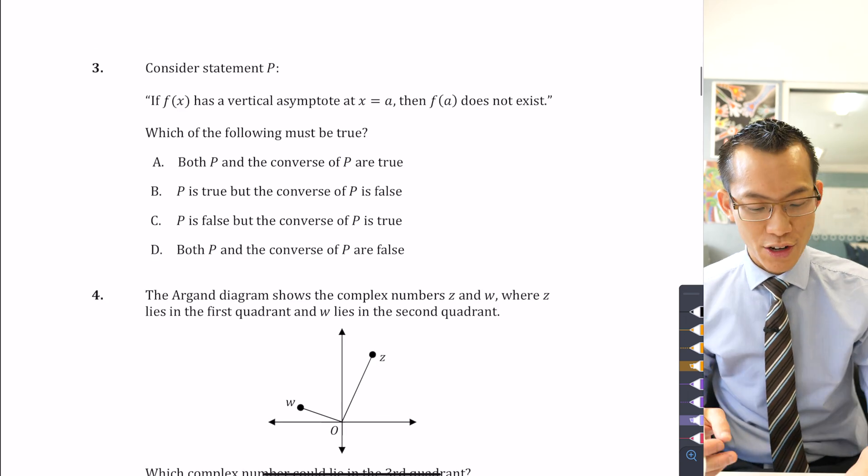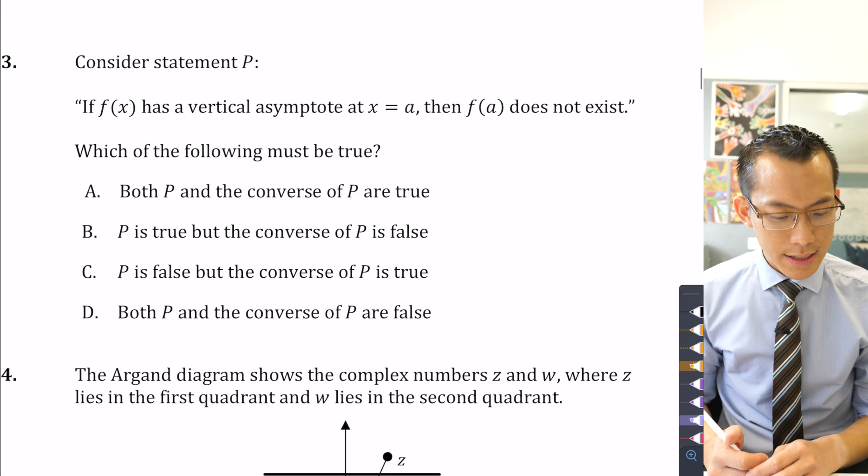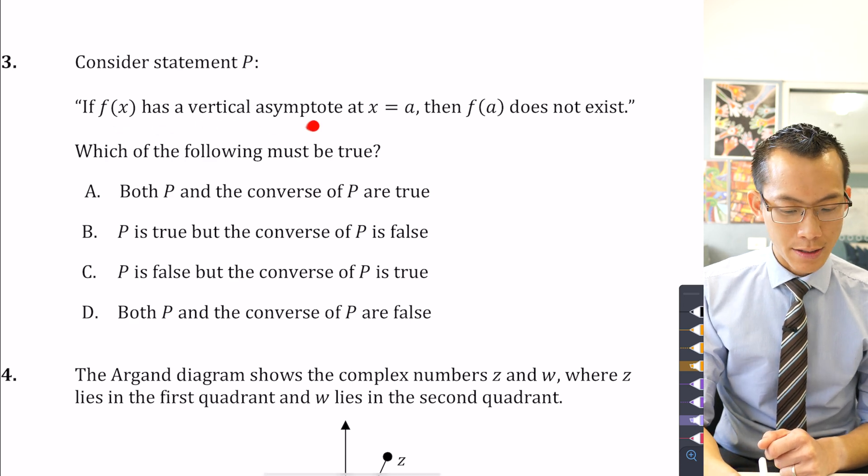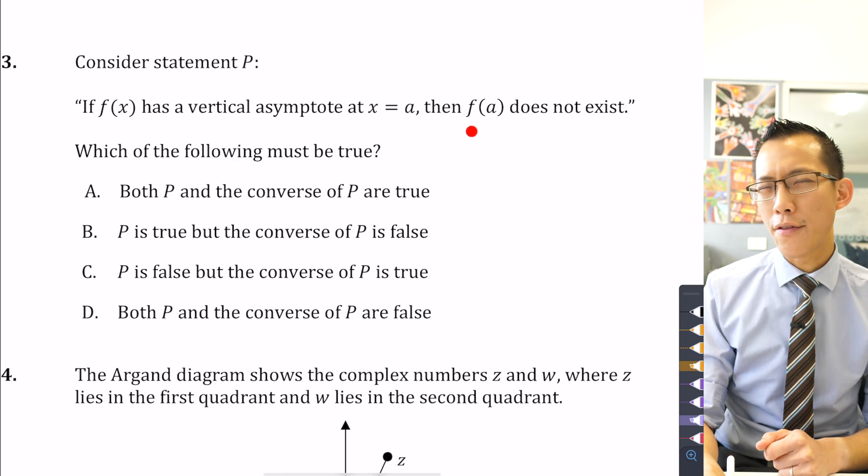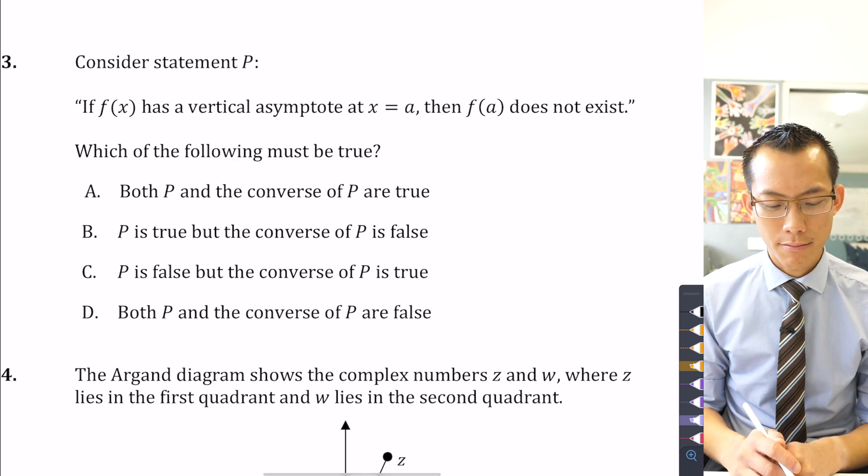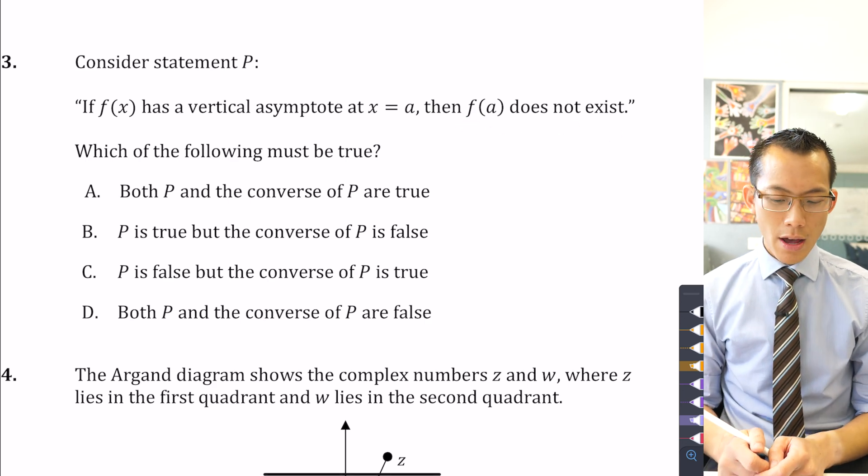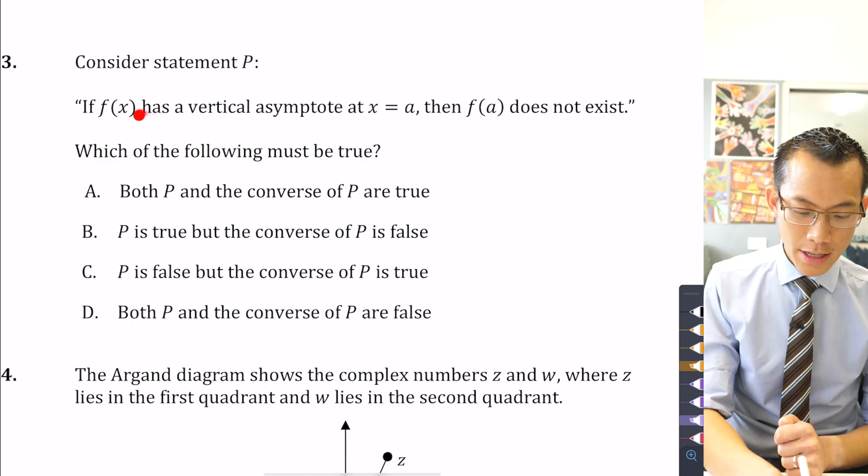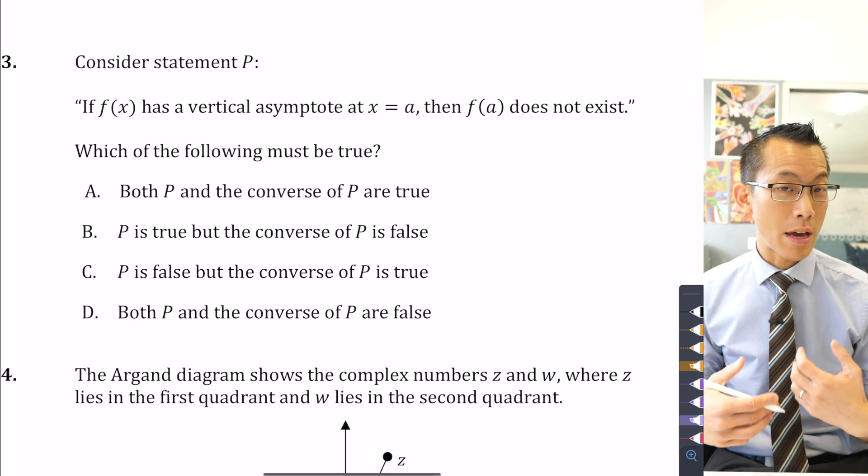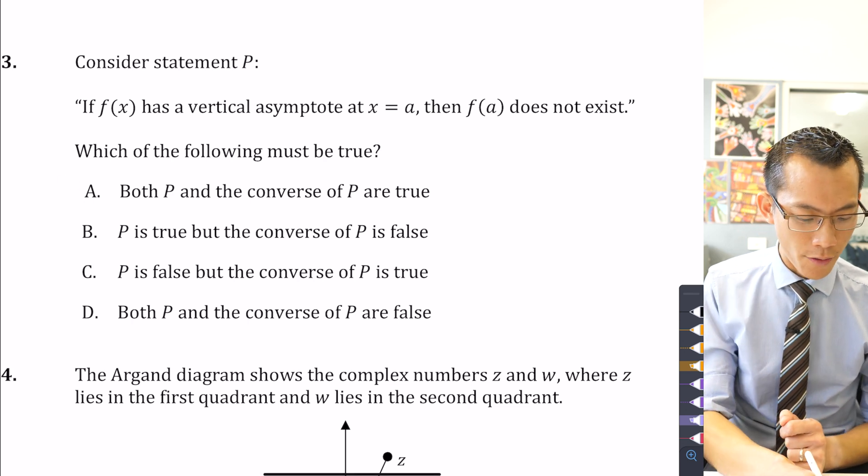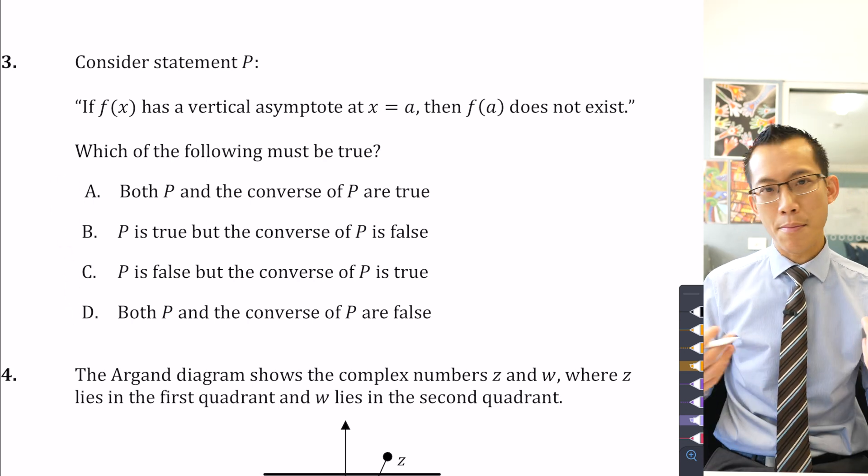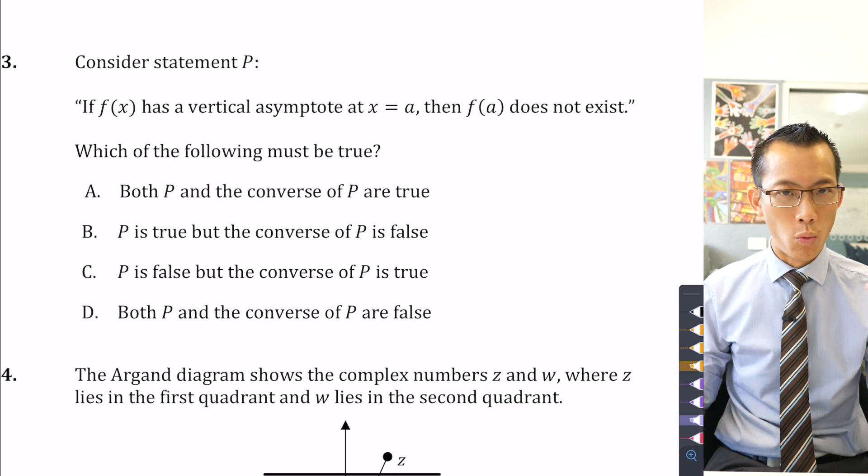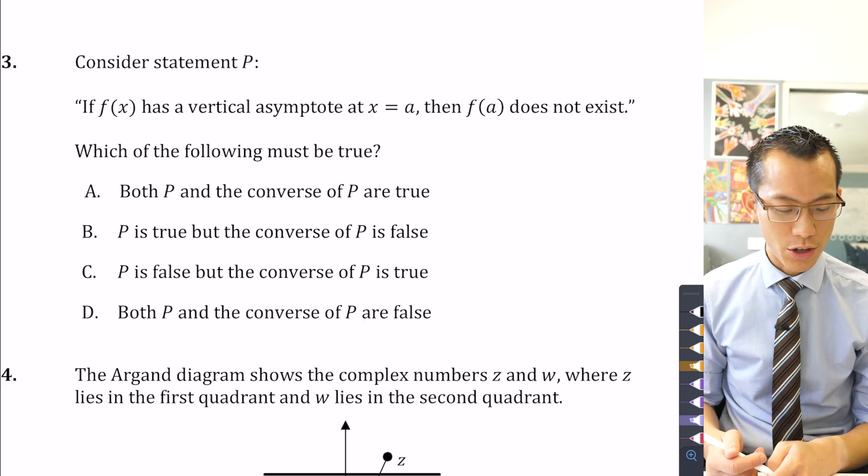This falls under the nature of proof now. So, consider statement P: If f(x) has a vertical asymptote at x equals a, then f(a) doesn't exist. Which of the following must be true? We're considering P and its converse. I need to be able to state the converse and work out of all these different combinations - either they're both true, they're both false, or one of them is true and the other one is false. I just need to sort out which is which.